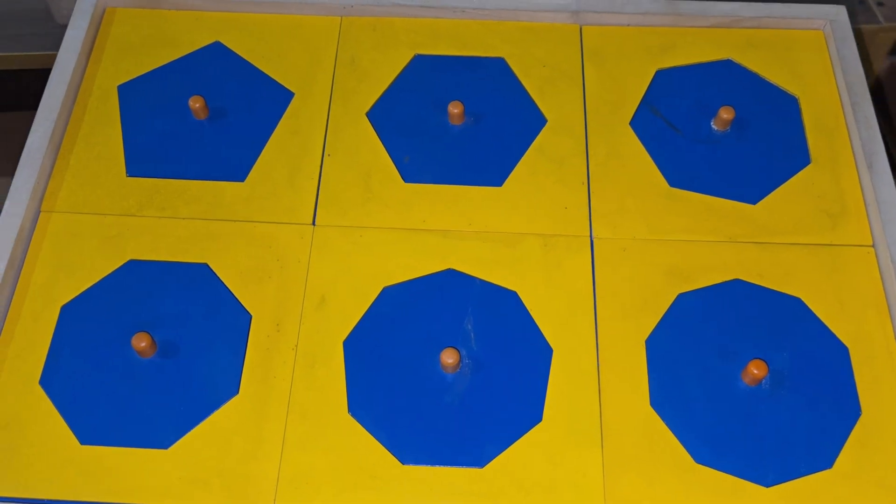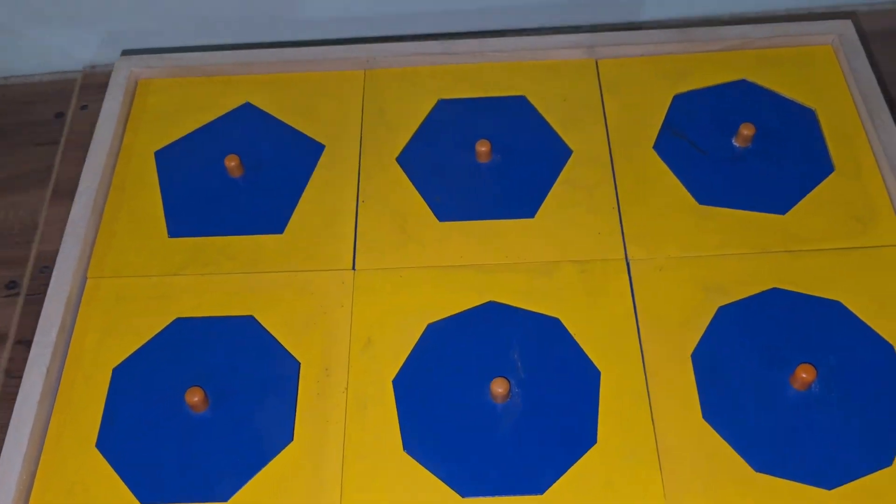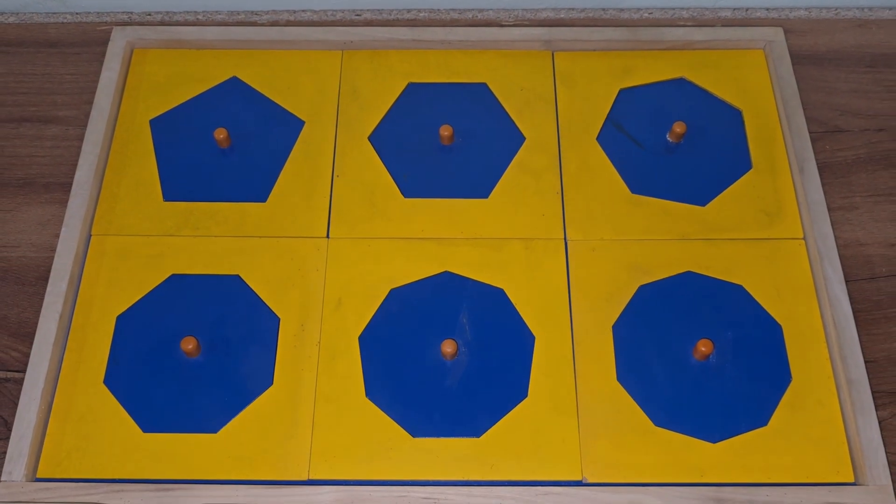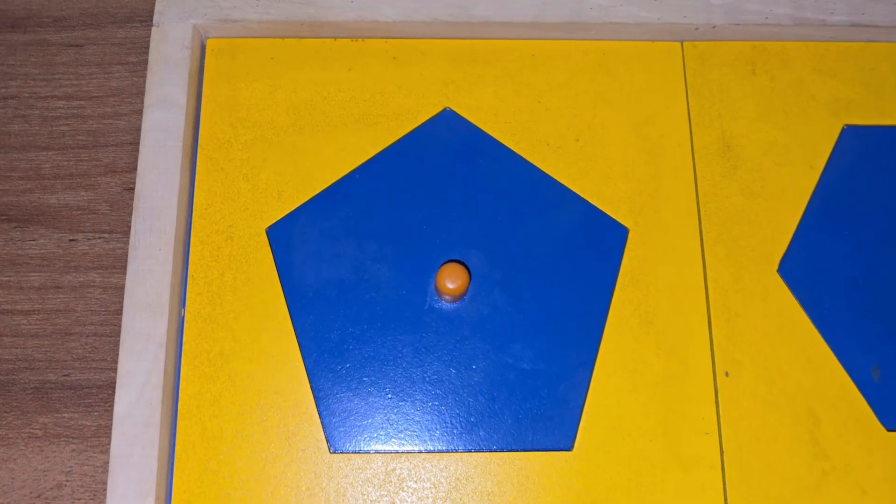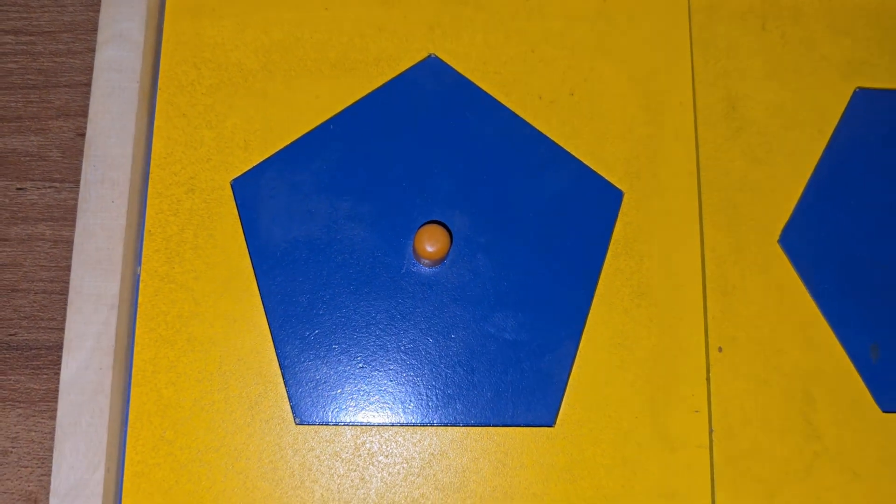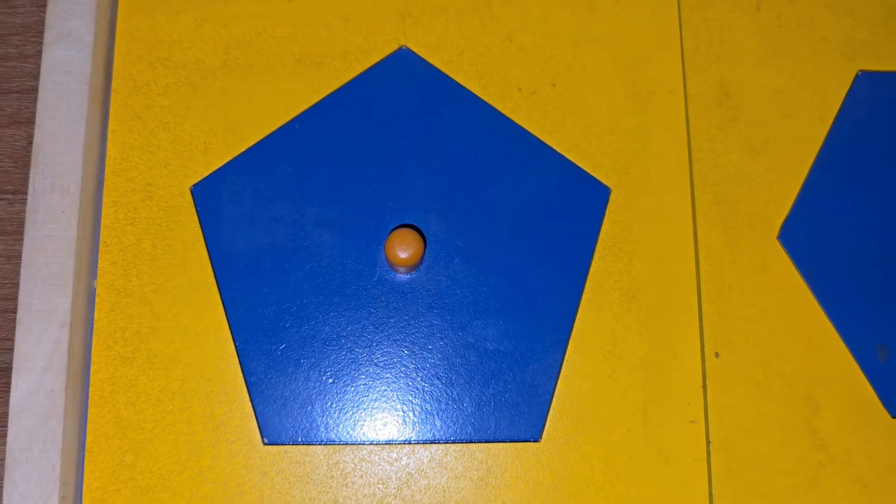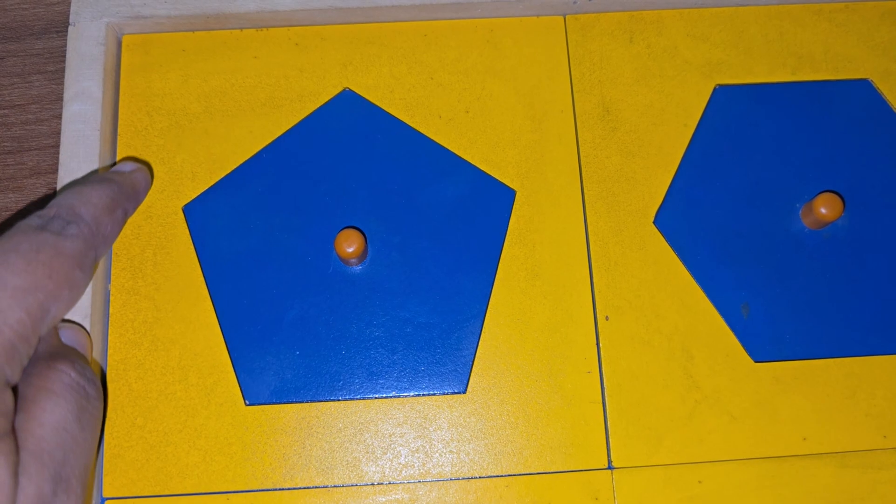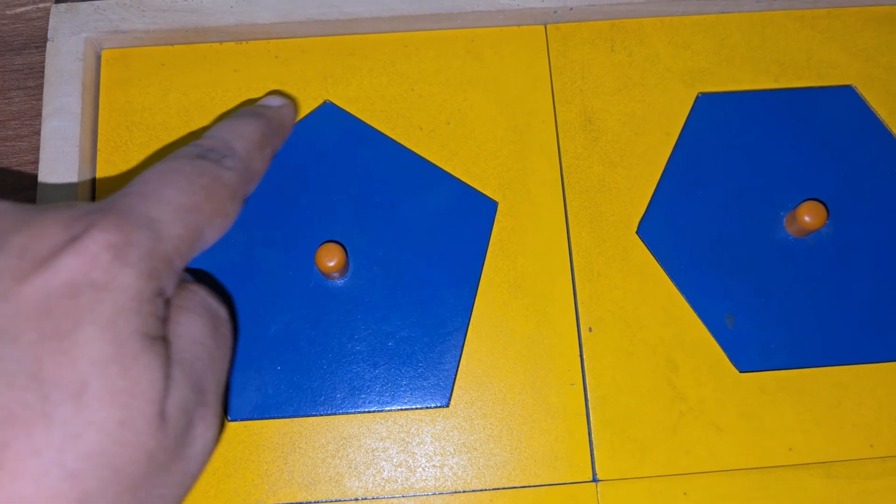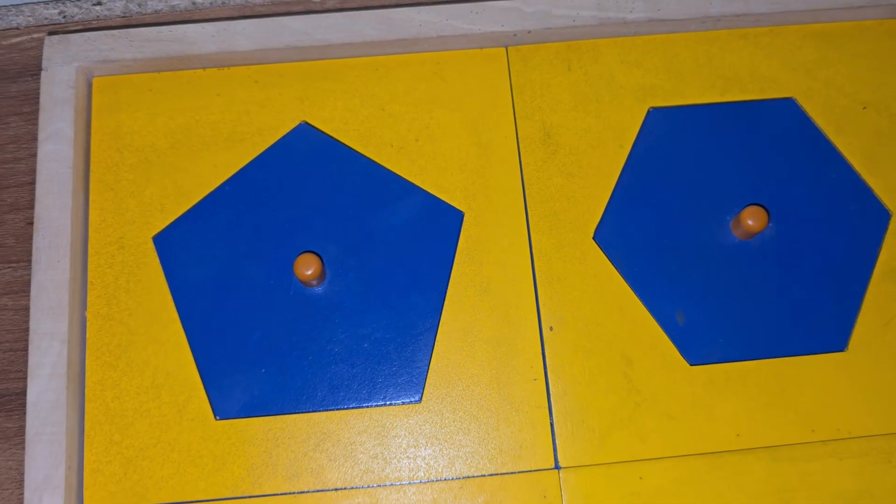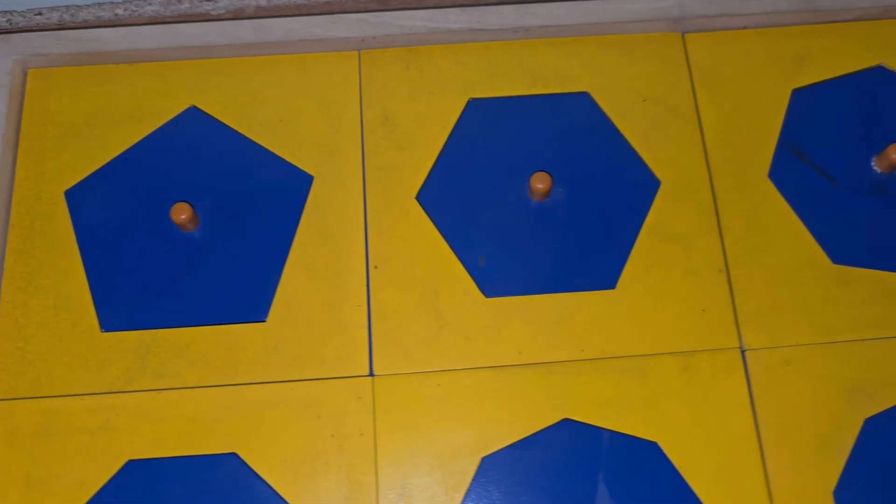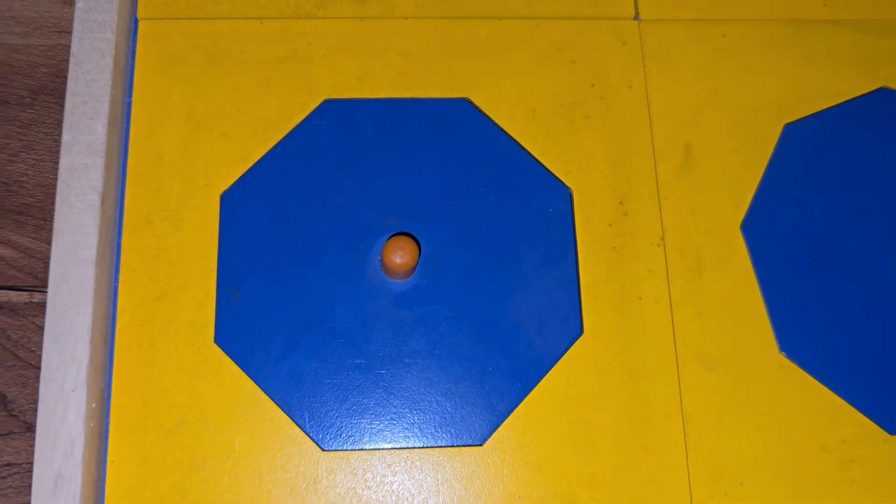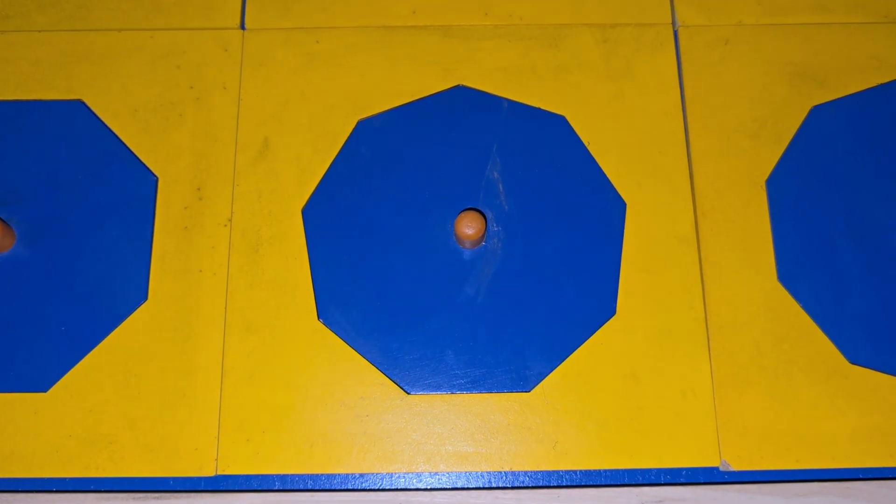Here we have six regular polygons. A polygon is a plane figure with at least three straight sides and angles, and typically five or more. In the fourth drawer of this geometric cabinet, we can see pentagon, hexagon, heptagon, octagon, nonagon, and decagon.